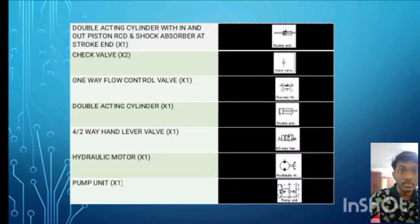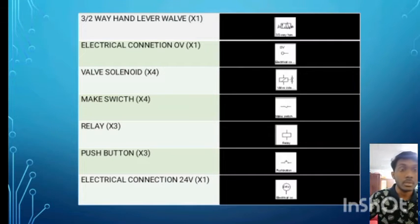Check valve in two quantity, one-way flow control valve in one quantity, double-acting cylinder in one quantity, forward two-way hand lever valve in one quantity, hydraulic motor in one quantity, pump unit in one quantity, three-way flow control valve in one quantity, and electrical connection 0 volt in one quantity, valve solenoid in four quantity, mix switch in four quantity, relay in three quantity, push button in three quantity, and electrical connection 24 volt in one quantity. Thank you.